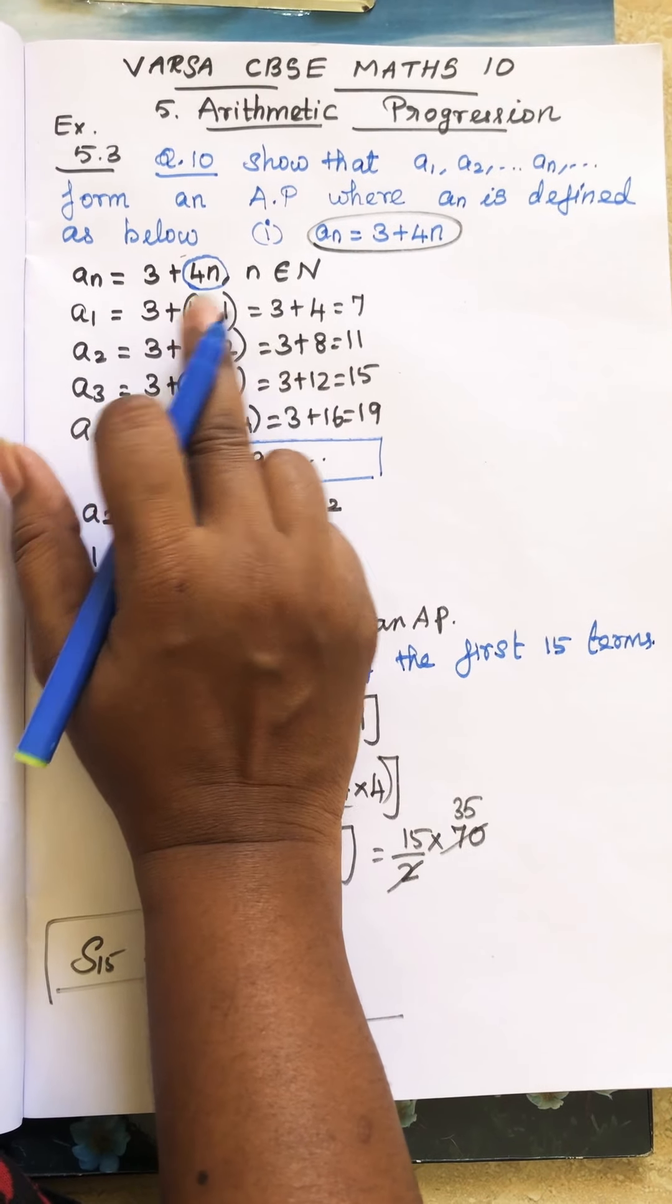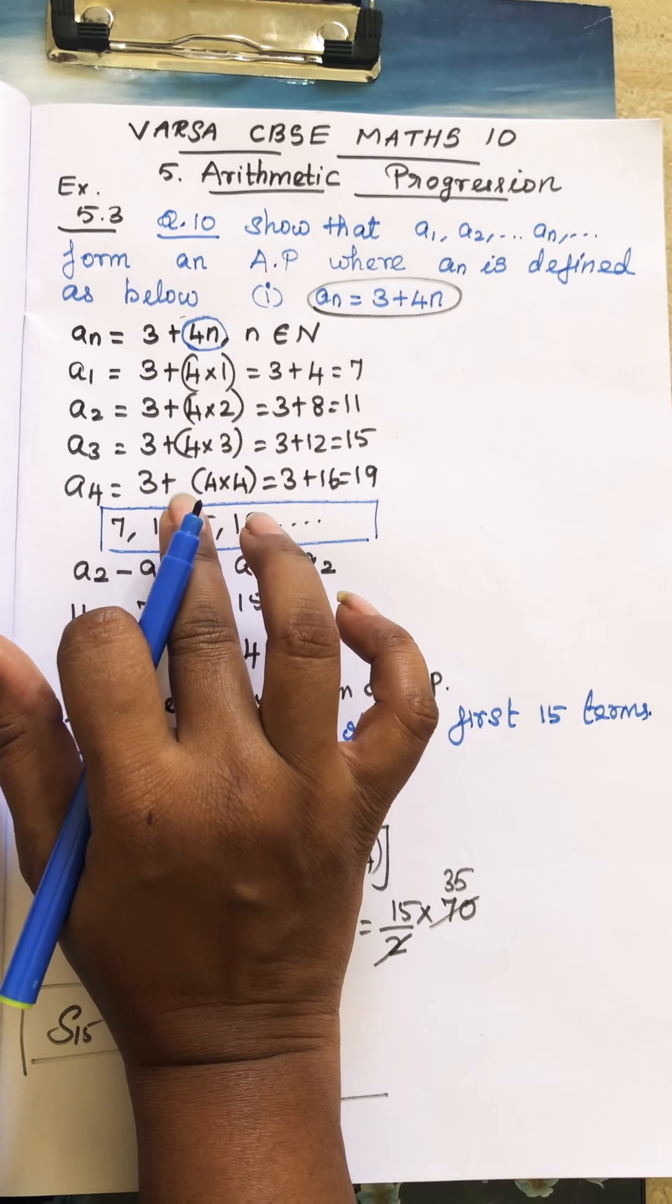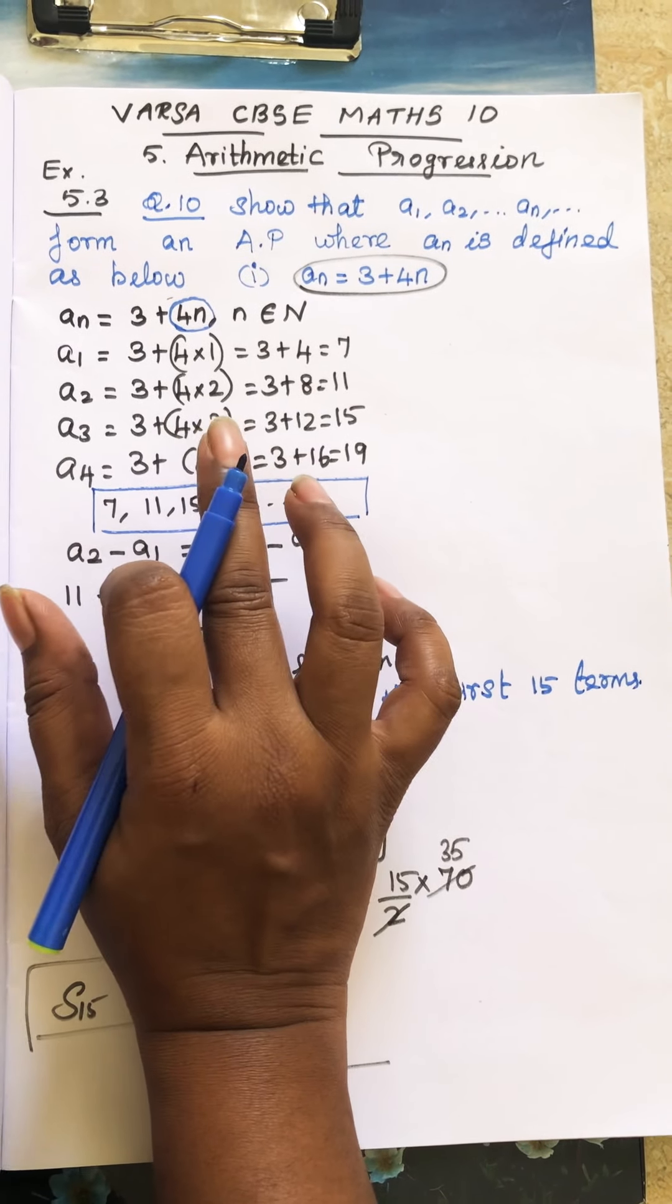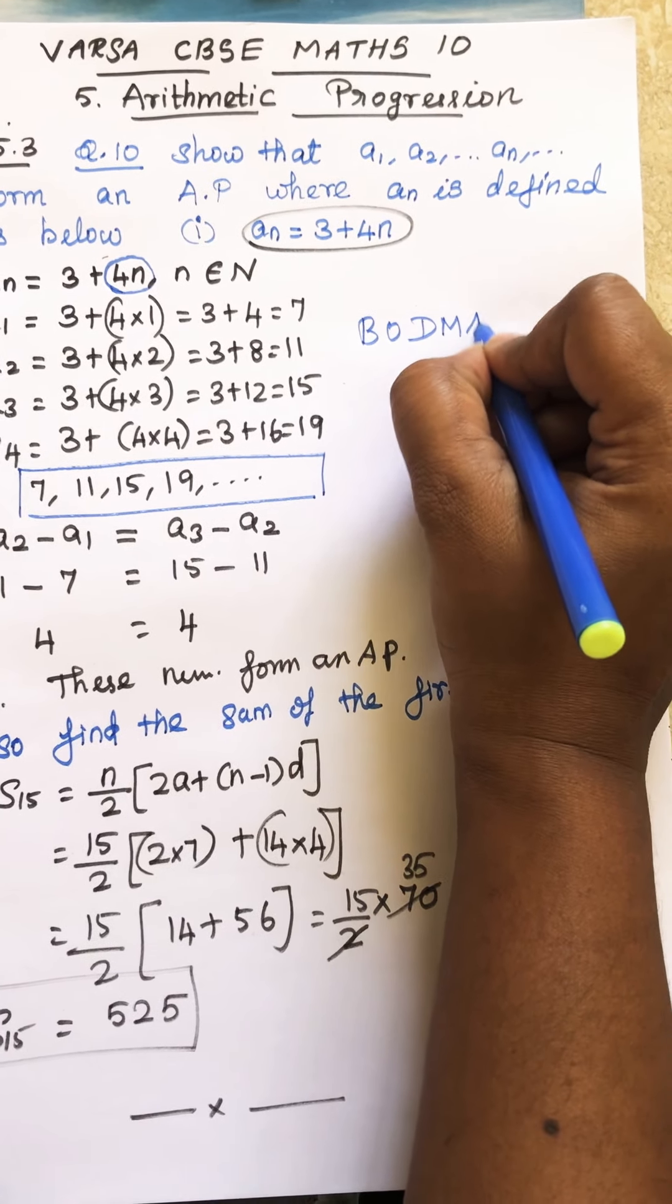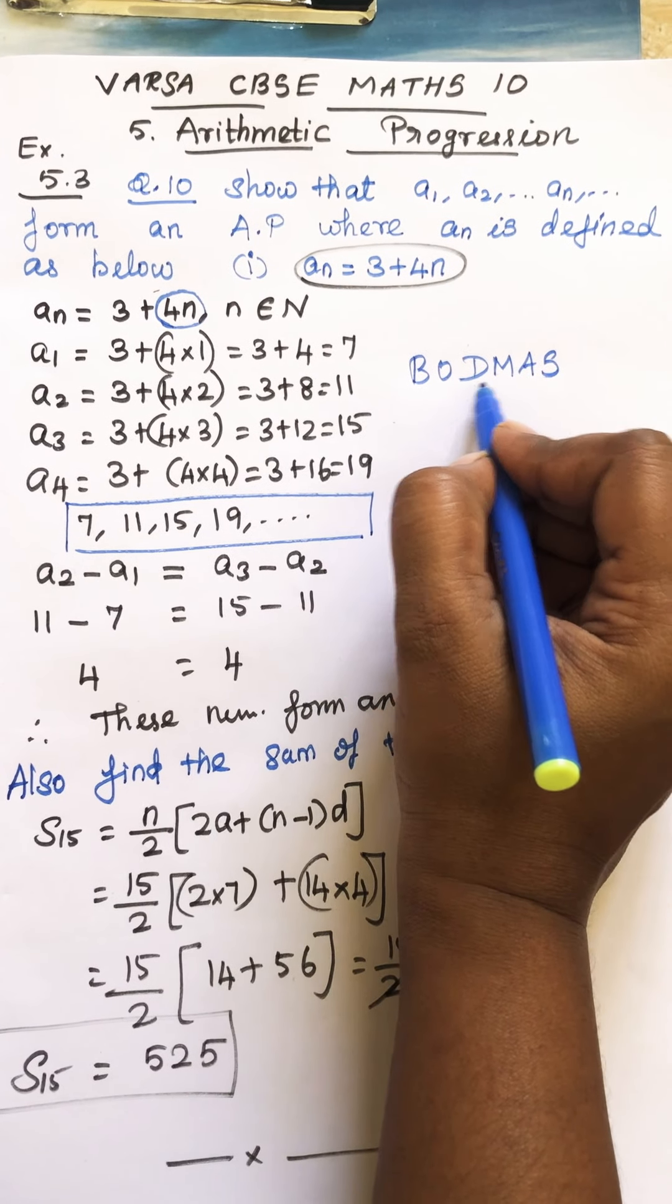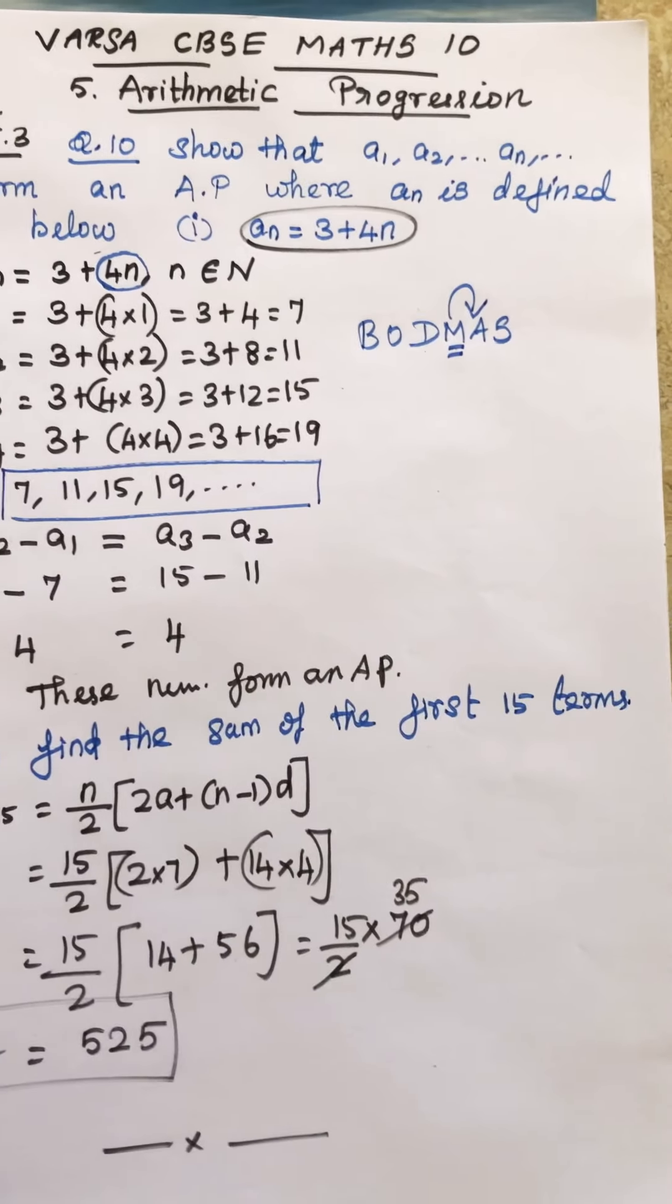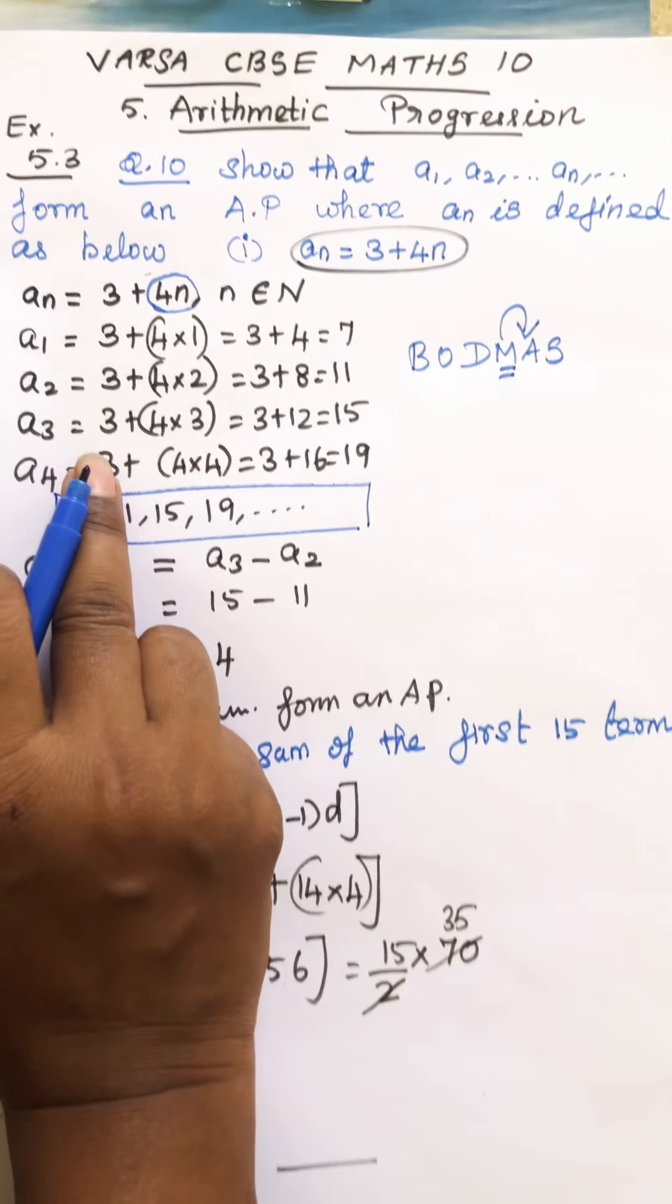Many of the students just add and multiply. That is wrong. We follow BODMAS rule. BODMAS rule: bracket, of, division, multiplication, addition, and subtraction. So we have to do multiplication and then addition. So last one is subtraction. So here you have multiplication and addition.